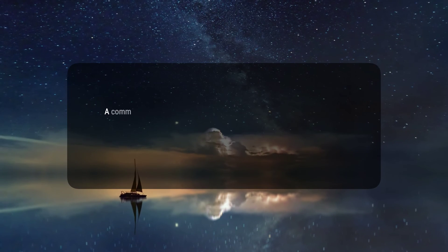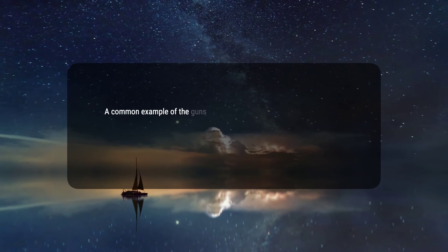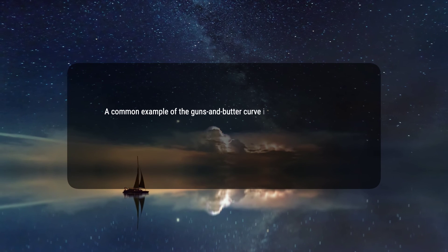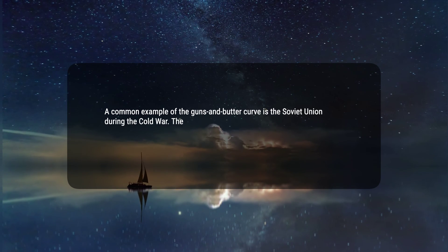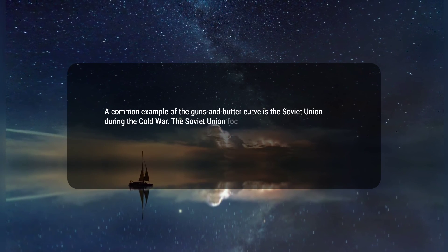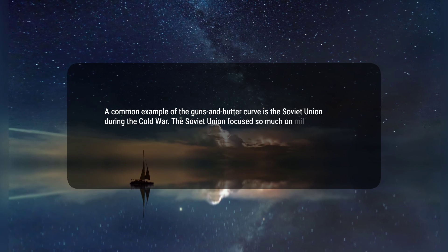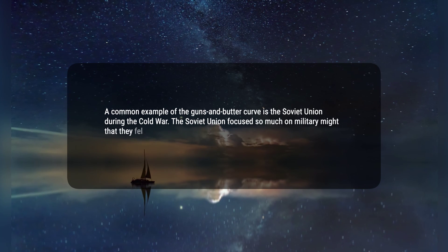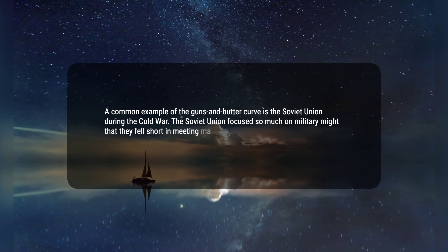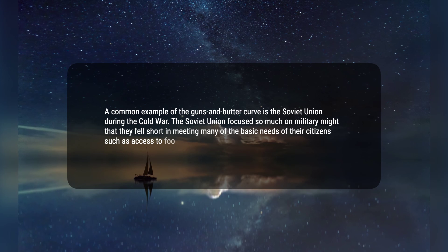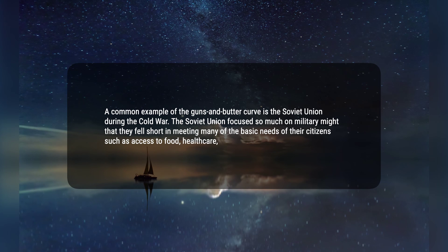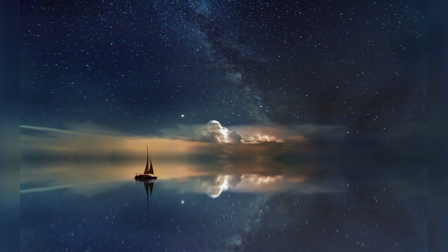3. A common example of the guns and butter curve is the Soviet Union during the Cold War. The Soviet Union focused so much on military might that they fell short in meeting many of the basic needs of their citizens such as access to food, healthcare, and education. Thanks for watching.